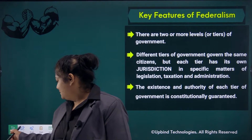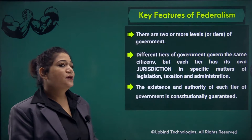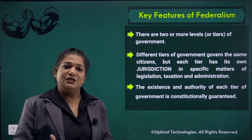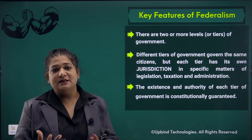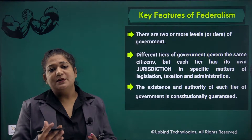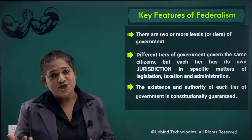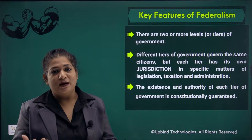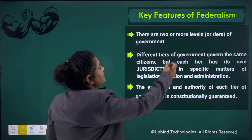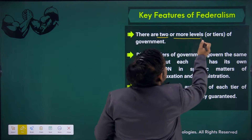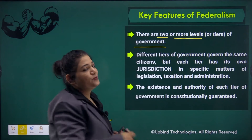Just as we have studied in the first chapter, when it comes to power sharing, that means there will be more people sharing power. This reflects the part of federalism — when it comes to two levels of federalism.